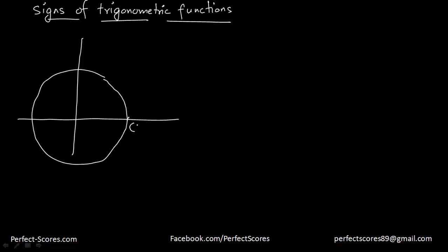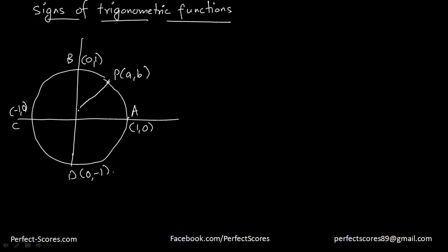We have the point A at (1, 0), B at (0, 1), C at (-1, 0), and D at (0, -1). We also have a point P somewhere on the circle with coordinates (a, b), where the radius equals 1, so b is the y-coordinate, a is the x-coordinate, and x is the angle.